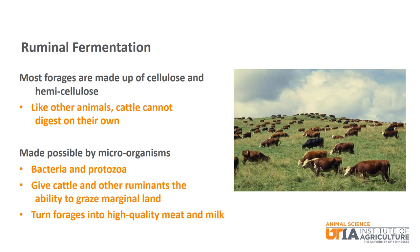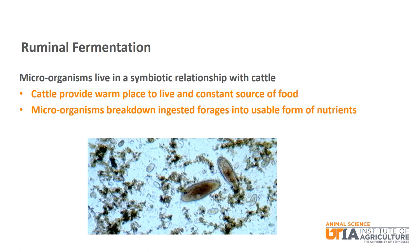Most forages are made up of cellulose and hemicellulose. Cattle, like other animals, are not able to digest these complex carbohydrates on their own. The ruminal fermentation is made possible by the rumen microorganisms. They give cattle and other ruminants the ability to graze land that is not well suited for anything else and turn the forages into high-quality meat and milk. A former college professor of mine used to call them biological bush hogs. The microorganisms and the animal live in a symbiotic relationship, meaning it is beneficial for both. The animal provides a warm place to live with a constant source of food — rumen board, so to speak. The microorganisms break down the ingested forages into a usable form that the animal otherwise would not be able to use.